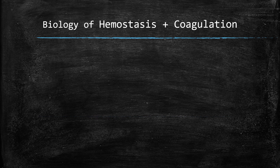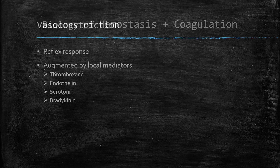Let's start off by reviewing the biology, or the mechanism, of hemostasis and coagulation. The first step in the hemostatic process is vasoconstriction. Blood vessels contain smooth muscle and elastin, so when they're cut, they contract and constrict, helping to control bleeding. This reflex response is augmented by local mediators including thromboxane, endothelin, serotonin, and bradykinin.